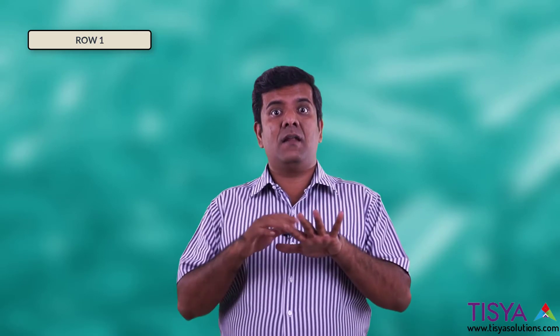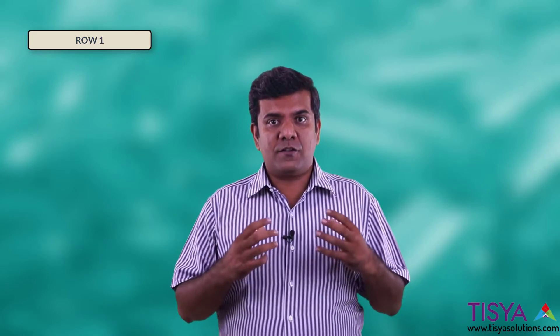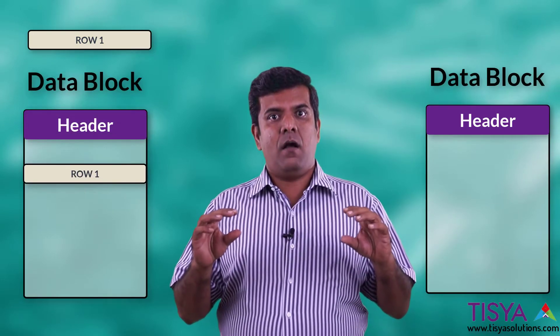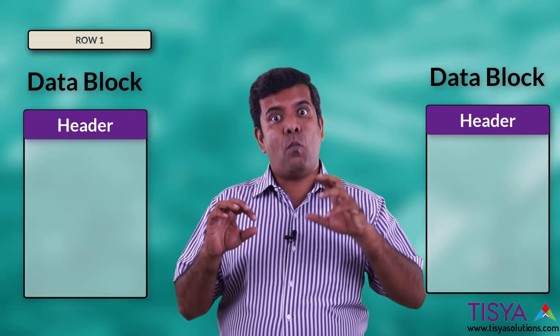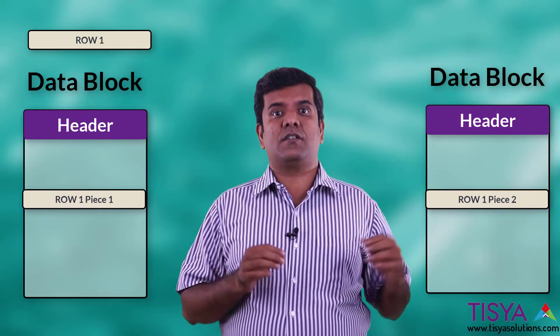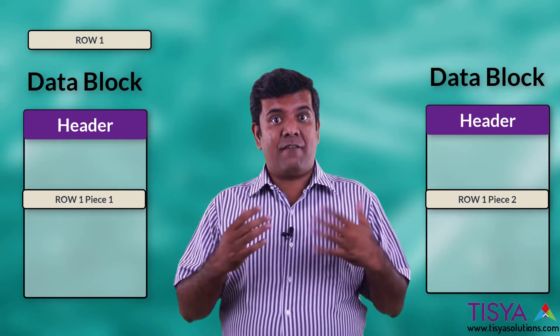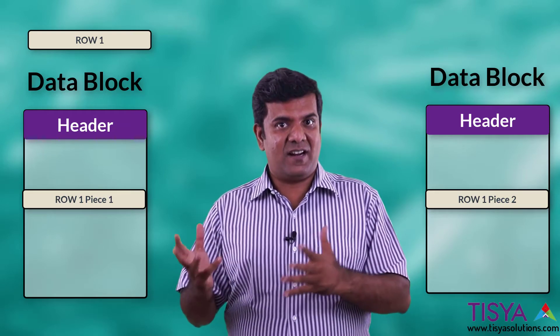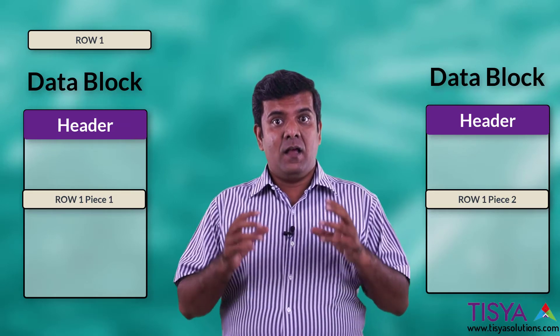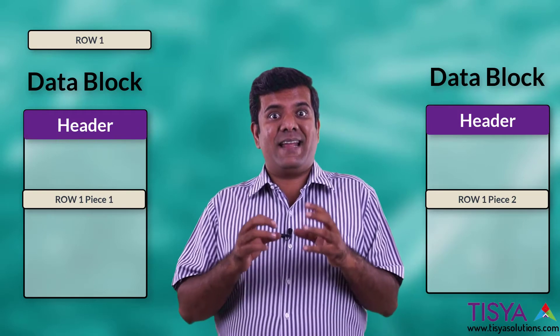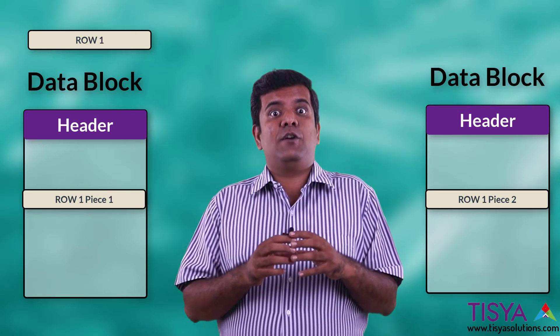Depending on the column definition, the row sizes can vary for each row of the same table. When a row is stored, it can be stored as one piece or it can get split into more than one piece and stored across blocks. A typical case could be when row chaining occurs. I will talk about row chaining and row migration in another video. But understand, a row need not necessarily sit in one block — it can get split into multiple pieces.